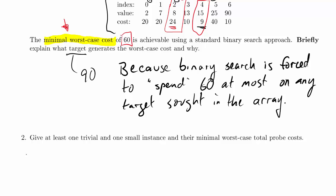We're working on problem 4.2 of the computer science 320 2014 winter 2 practice exam. In this problem we're supposed to give at least one trivial and one small instance of the problem we're working on and their minimal worst-case total probe costs.